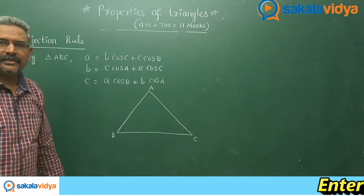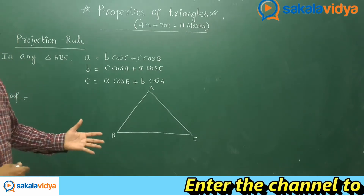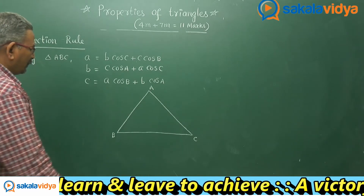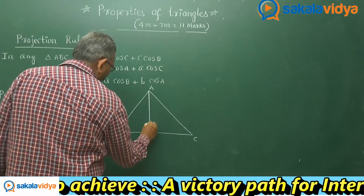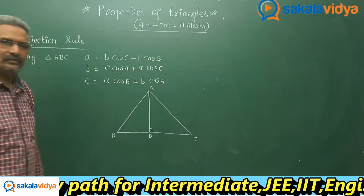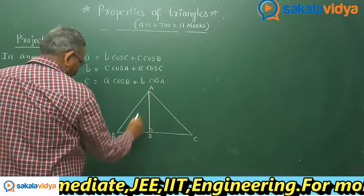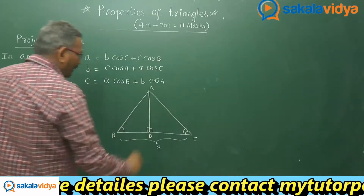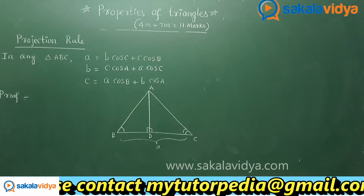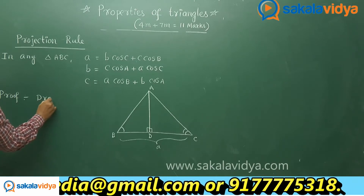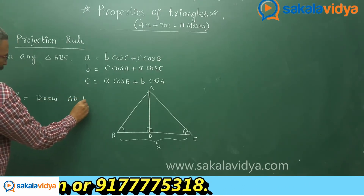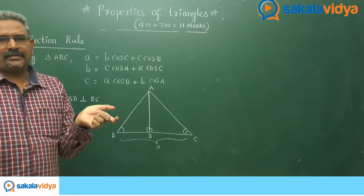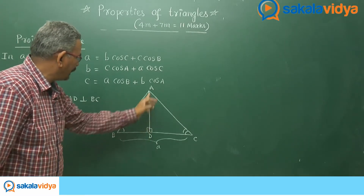For the first case, we want to extend this proof even for right angle and obtuse angle triangles — it holds good for all types of triangles. Now draw the altitude, or perpendicular, AD on BC. We know that BC is small a, angle B is here, and angle C is here. The altitude AD divides the triangle into two triangles: triangle ABD and triangle ACD.